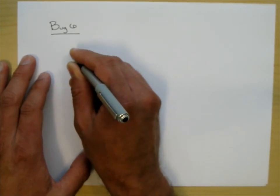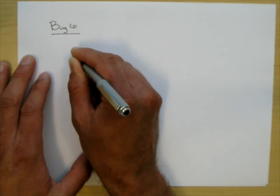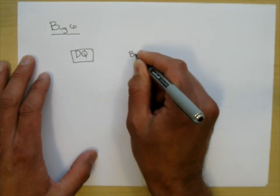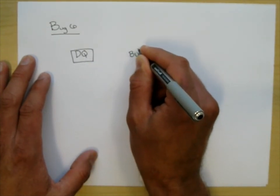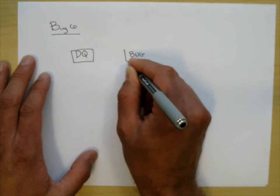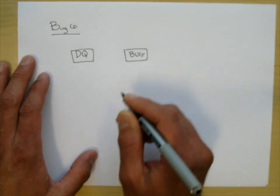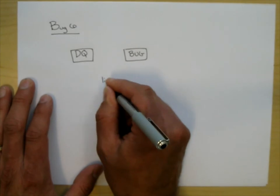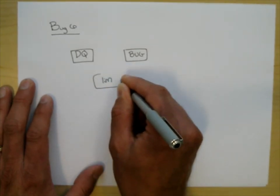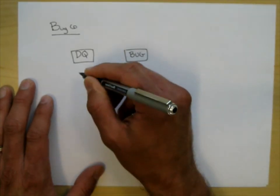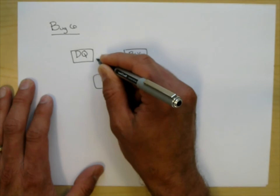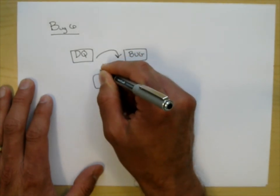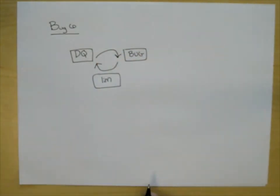We've had the DQ. We've had bug handouts where we studied instantaneous velocity, average velocity, stuff like that. And then we also have limits that we've been doing. There was some continuity. So what we're going to be doing is we're going to be making connections with all three of those.